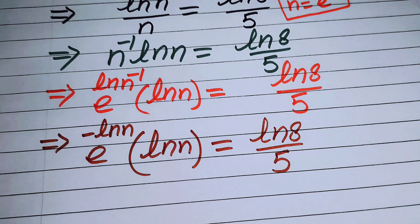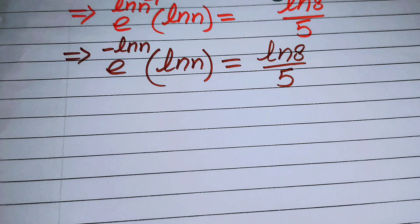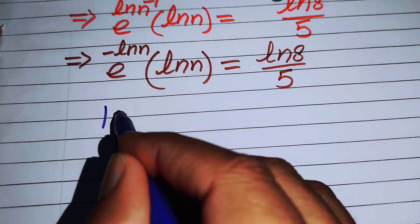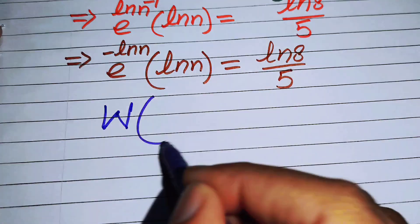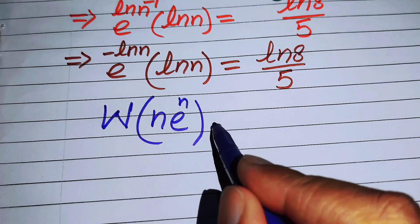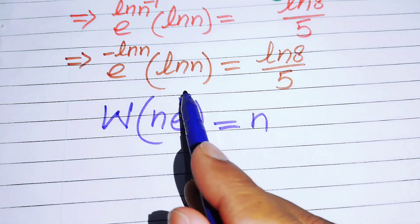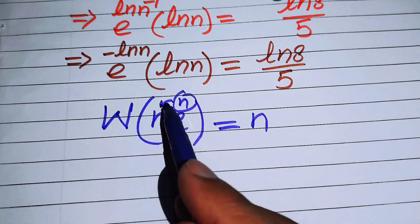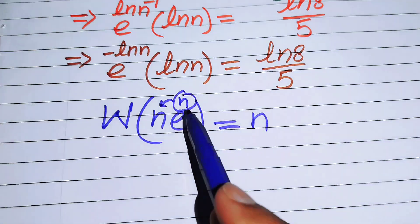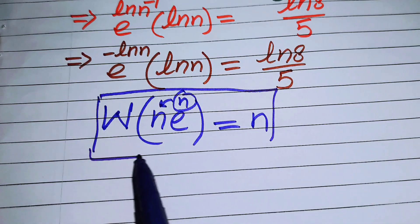Before the next step, let me explain the Lambert W function. It looks like this: W(n·e^n) = n. It means that if you have an exponent of e multiplied by itself, the output will be that exponent n. This is called the Lambert W function.